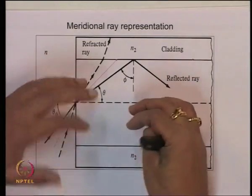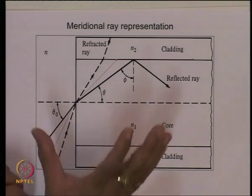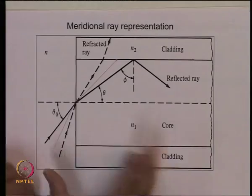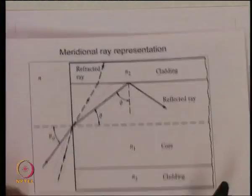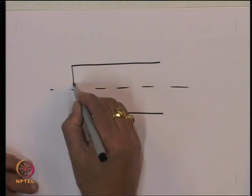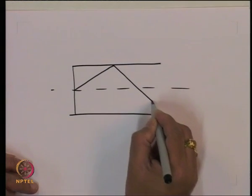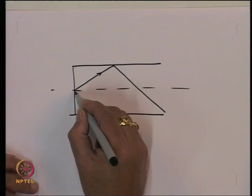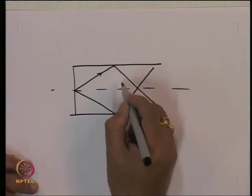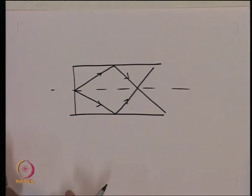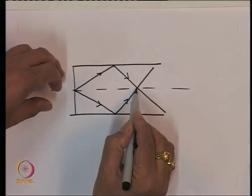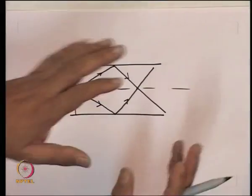Since there are infinitely many planes passing through the axis of the optical fiber, we have an ensemble of rays that get totally internally reflected and come together again and again. If I look at one ray along the axis and another launched at an angle, all rays making the same angle with respect to the axis start together, travel the same distance, meet at the axis, go again, and so on.